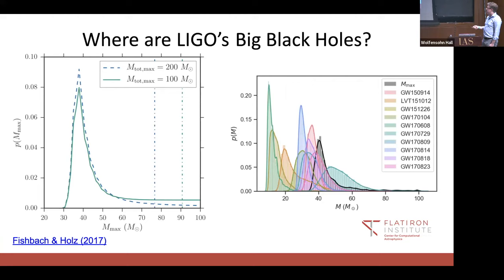This comes back to a paper by Maya Fishbach and Dan Holtz from 2017. Back in the day when we had four binary black hole systems, they'd noticed none of the black holes that we observed were very heavy. There were no hundred solar mass black holes in that population. Yet those should be the loudest, the ones we can see the furthest. So the title of this paper is literally where are LIGO's big black holes? We should have seen them. So evidently there must be some physics that prevents or at least strongly reduces the merger rate of these very heavy black holes.